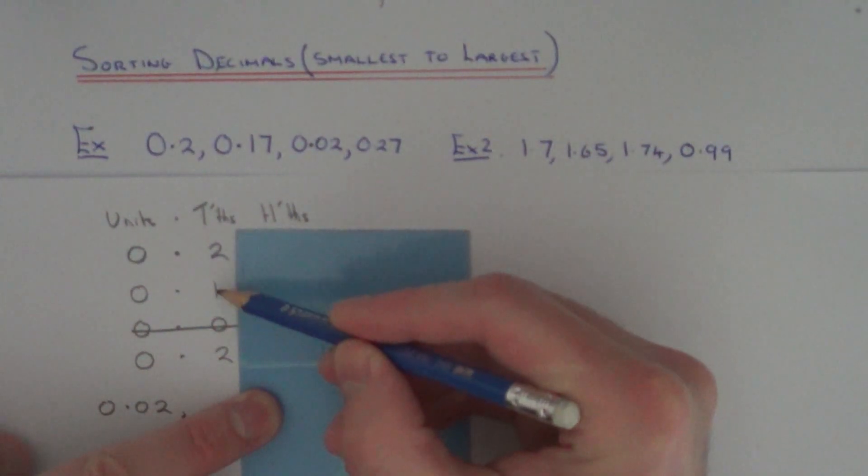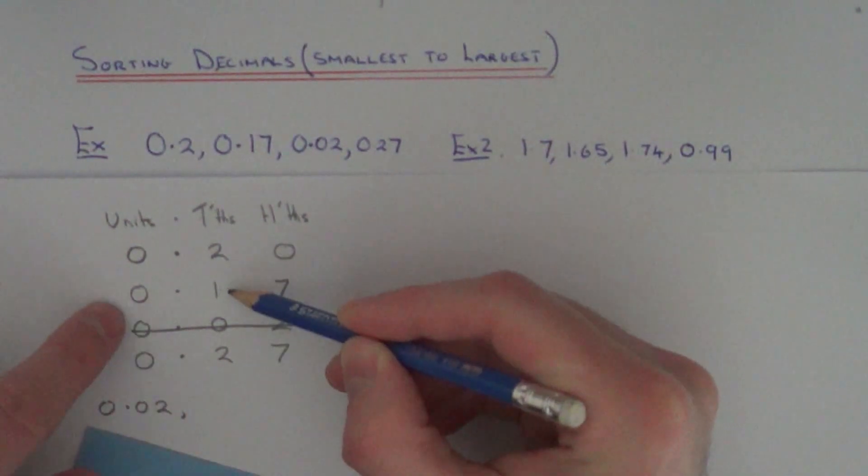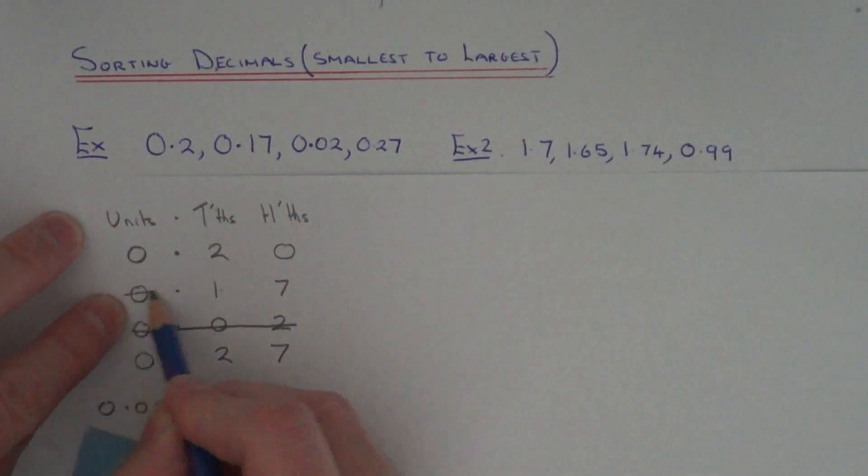So in our tenths column you can see we've got a 1 here. This will mean that 0.17 will be our next biggest decimal.